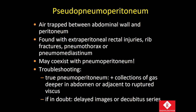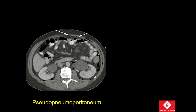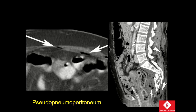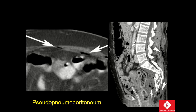Pseudopneumoperitoneum represents air trapped between the abdominal wall and the peritoneum, and it is a relatively common cause of difficulty in diagnosis of bowel injuries. Here is an example where you have linear gas collections accumulating outside of the peritoneum, between the parietal peritoneum and the abdominal wall musculature. This patient had no intraperitoneal injury. The source of this extraperitoneal gas was arising from the rectum — there is a sacral fracture with a rectal tear that allowed escape of gas through the pelvis into the buttocks, then accumulating in the anterior abdominal wall. If you have a question about whether a gas collection is intra- or extraperitoneal, you can always repeat a CT or perform a decubitus series, where intraperitoneal gas is expected to move with gravity.